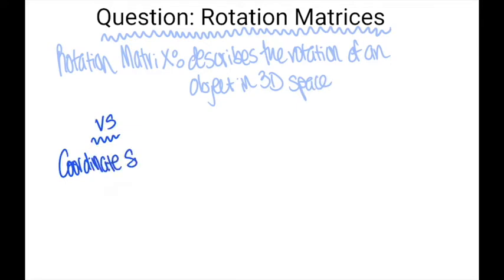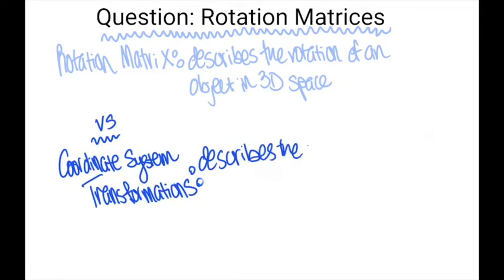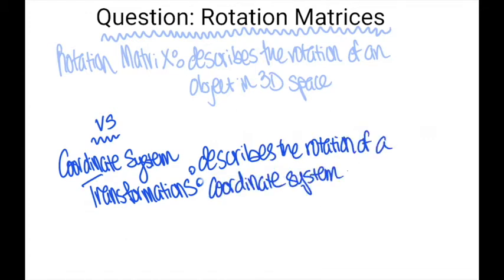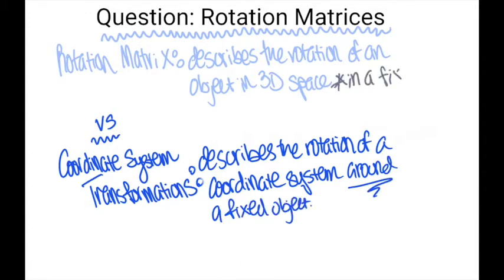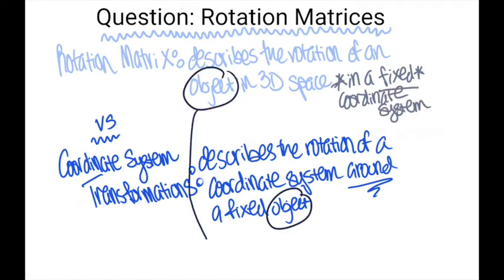If you already know about coordinate system transformation matrices, you can think of these as two concepts being the exact opposite of each other. While a transformation matrix describes the rotation of a coordinate system around a fixed object, a rotation matrix describes the rotation of an object in a fixed coordinate system, which in our case is a vector as it has both magnitude and direction.